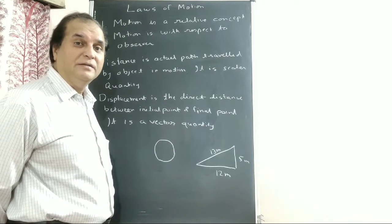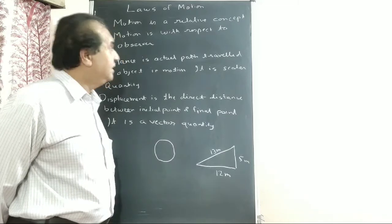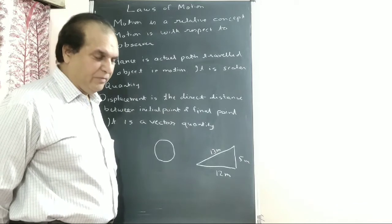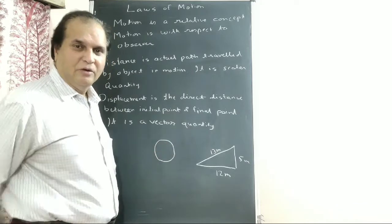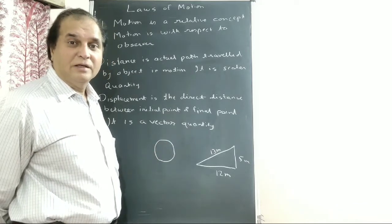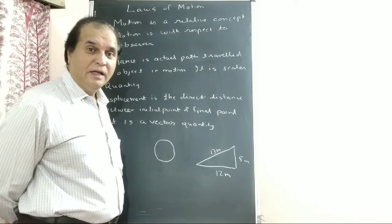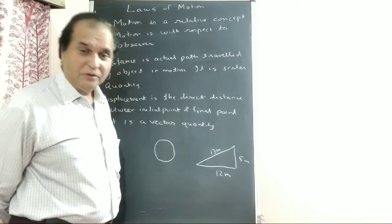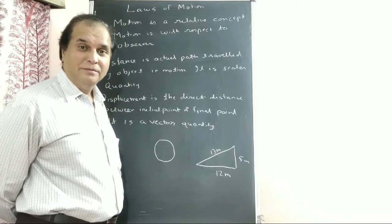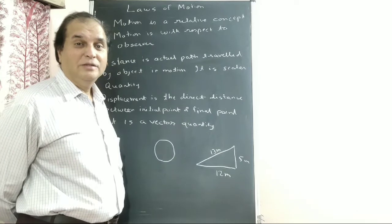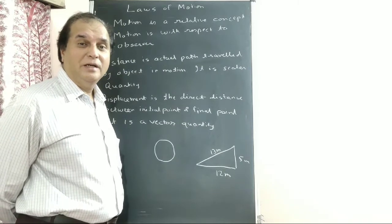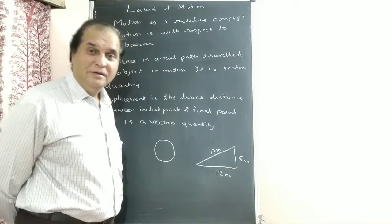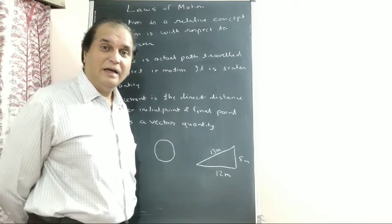What is motion? Motion is a relative concept. Two persons are sitting close by — they feel they are not in motion. But we are in motion. How much? 29.4 km in one second — Earth is moving. You are thinking we are at rest, but we are not.